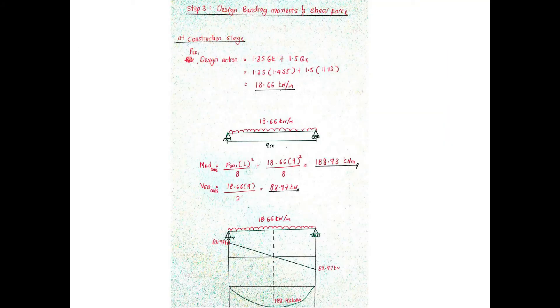From the loads that have been calculated earlier, we determined that at construction stage, the design load is 18.66 kN/m.